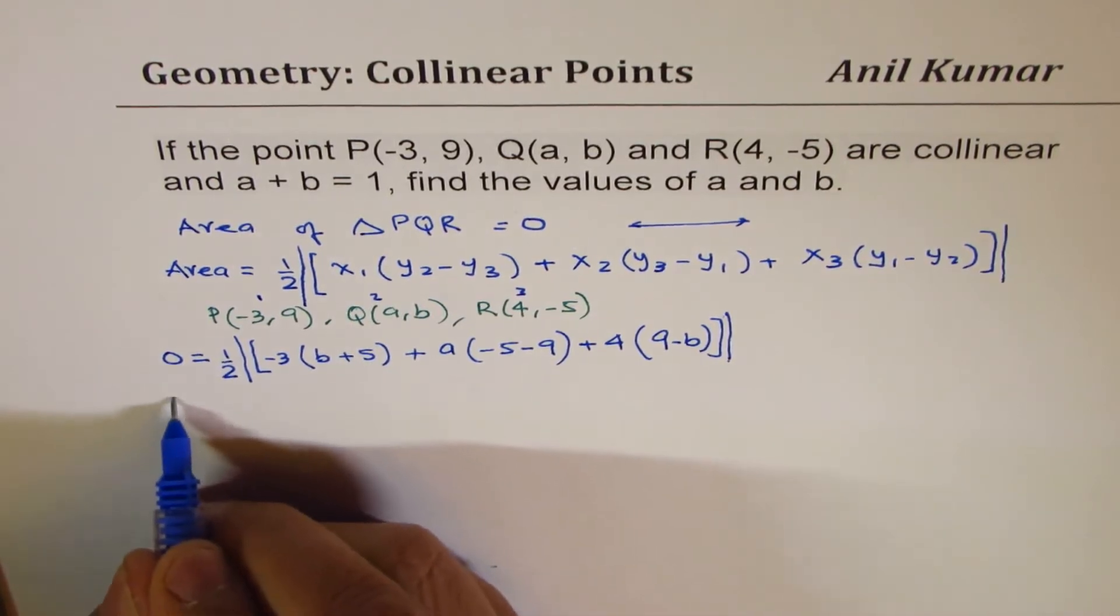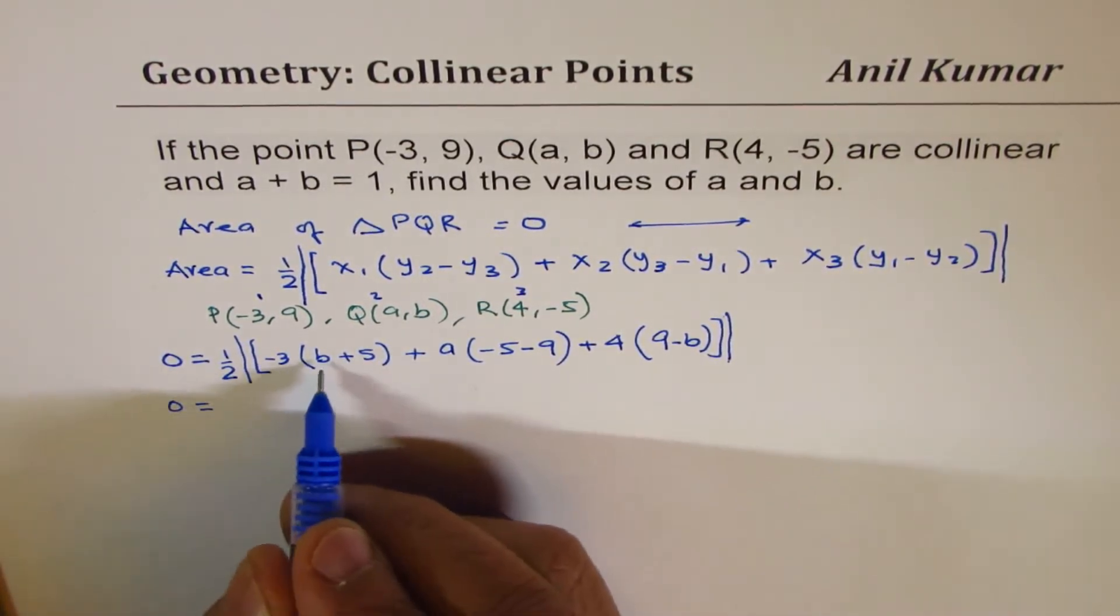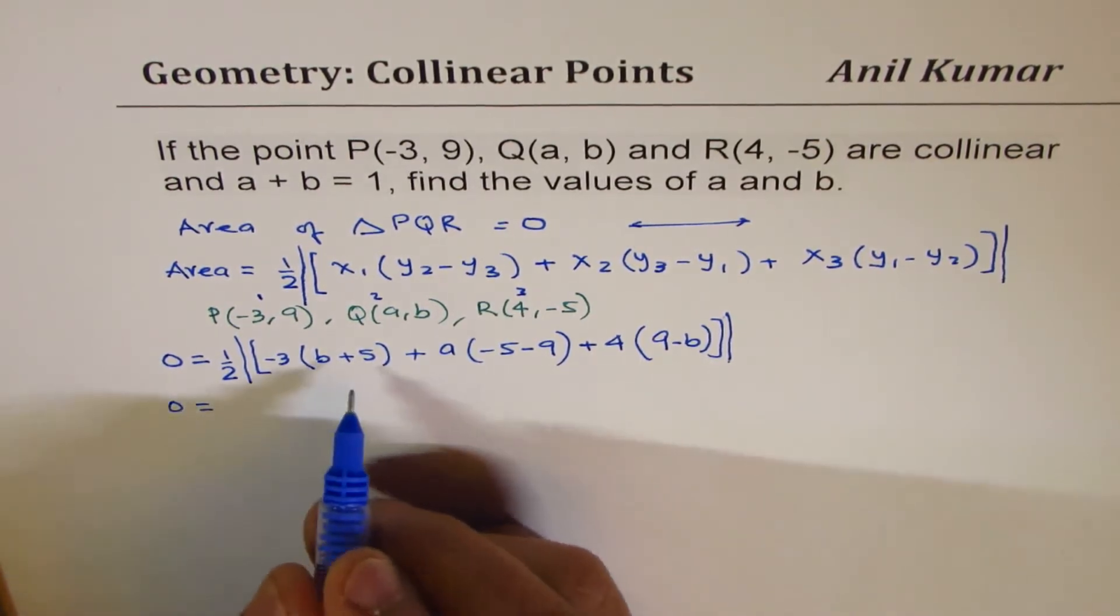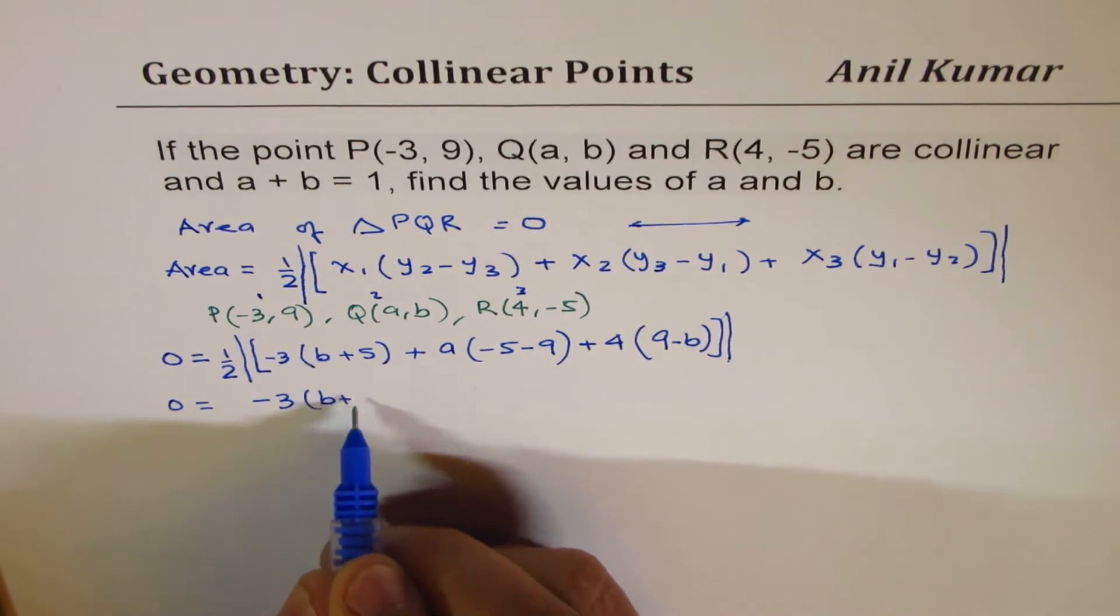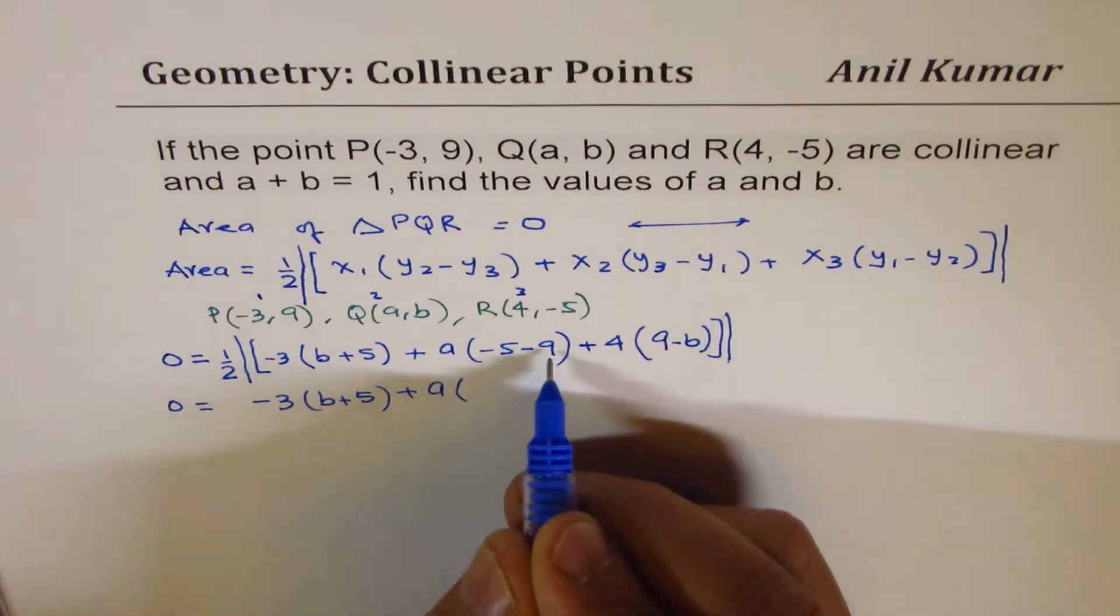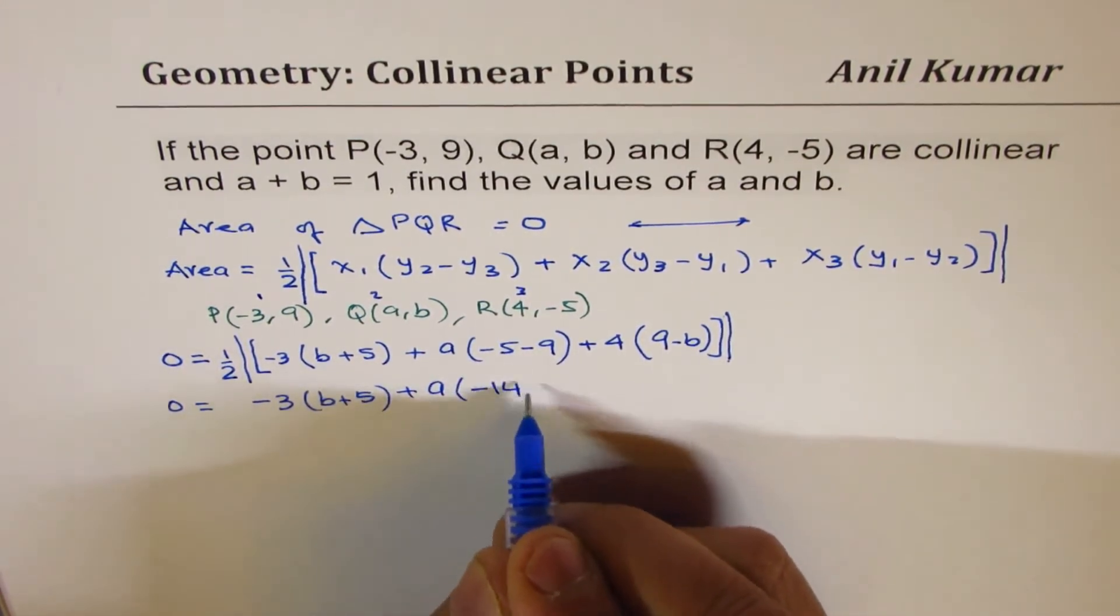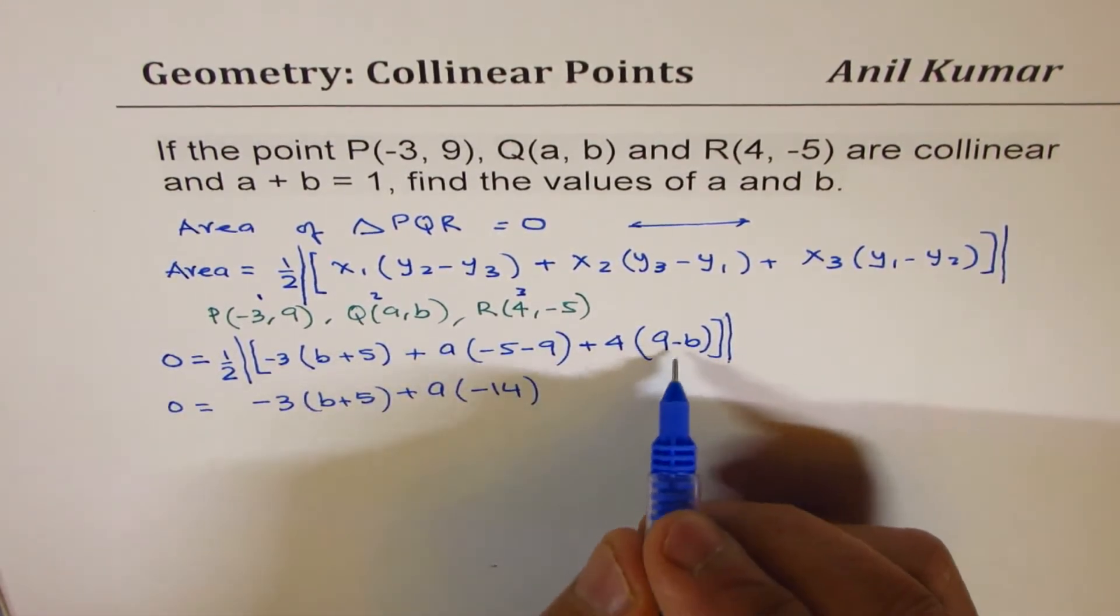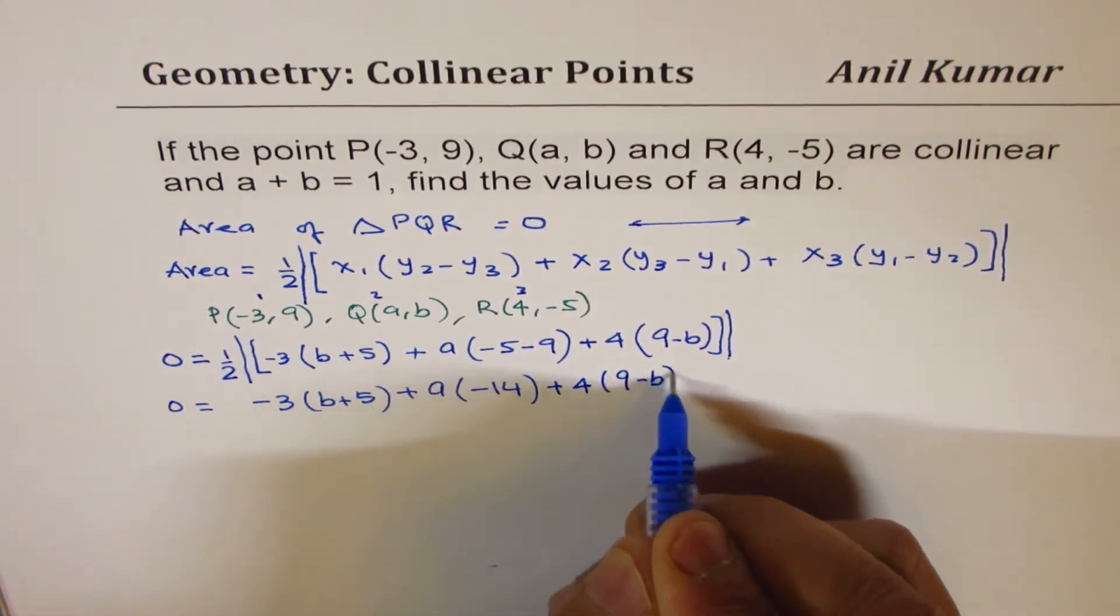Multiply it by 2, we get 0 equals 0. Now we can open this bracket. Let me just solve this first. It is -3 times (B plus 5), plus A times (-14), and here we have plus 4 times (9 minus B).